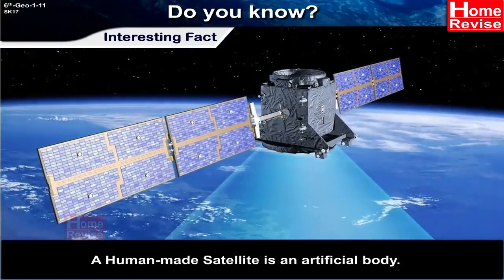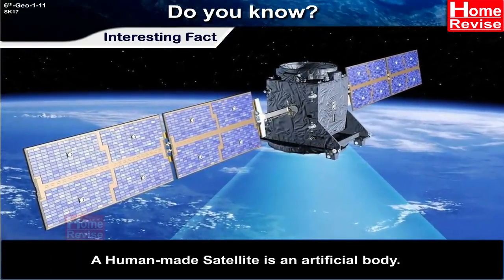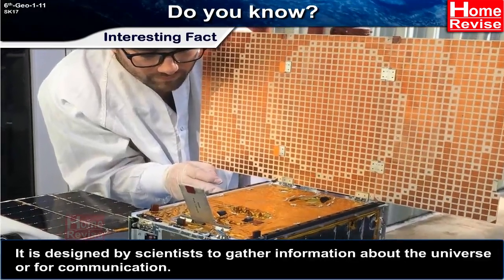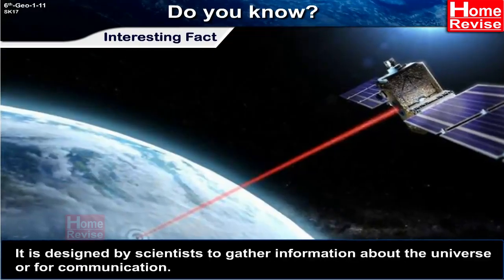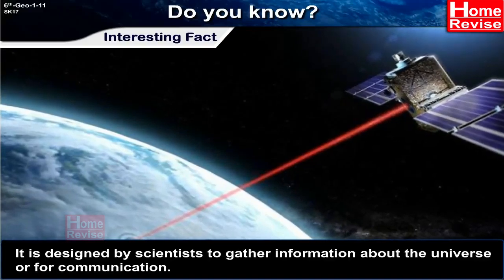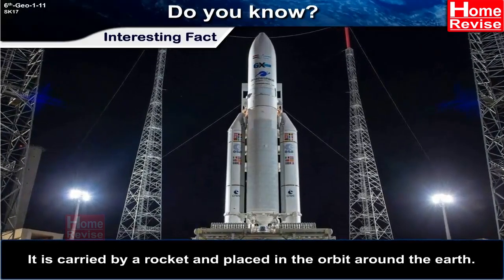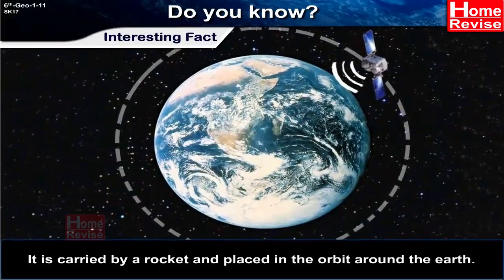A human-made satellite is an artificial body. It is designed by scientists to gather information about the Universe or for communication. It is carried by a rocket and placed in the orbit around the Earth.